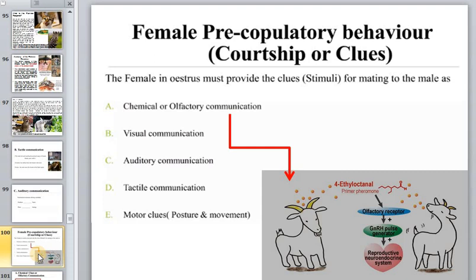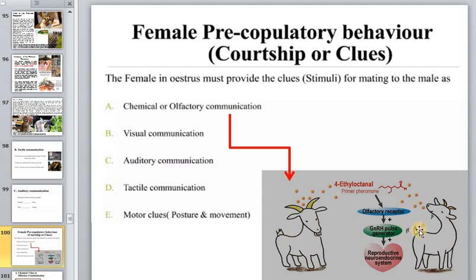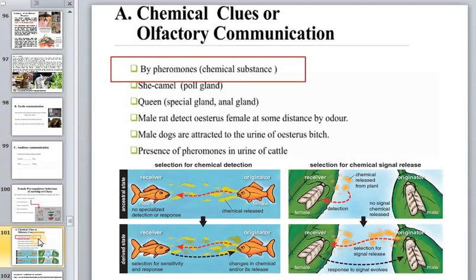Pheromones play a key role in female pre-copulatory behavior as well. The female in estrus must provide chemical and olfactory cues as stimuli for mating in males. Communication modalities include chemical/olfactory, visual, auditory, and tactile cues. These pheromone molecules can be produced by either males or females. More than 1,000 types of chemosensory receptors exist in the nasal cavity, and the special vomeronasal organ in the mouth of animals detects pheromones, which can control sexual activity.